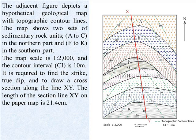It is required to find the strike and true dip, and to draw a cross-section along the line X-Y. The length of the section line X-Y on the paper map is 21.4 centimeters.